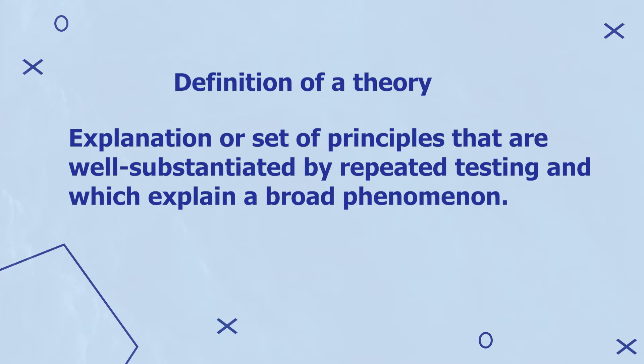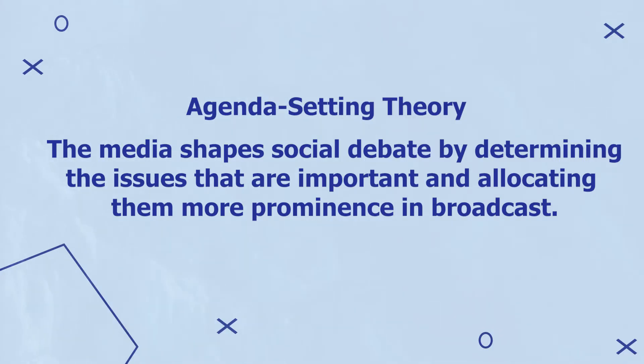This leads us to the second step of the research process, which is finding a theory that supports my observation. A theory can be defined as an explanation or set of principles that are well substantiated by repeated testing and which explain a broad phenomenon. The development of a theory is only possible through rigorous and repeated hypothesis testing. Theories provide a framework in which we view the world. The theory that comes to mind for my issue — the likeliness of Instagram users to eat out — is the agenda setting theory. The agenda setting theory posits that the media shapes social debate by determining the issues that are important and allocating them more prominence in broadcast. Some of my friends that use Instagram more may be victims of the agenda setting role of the media, influencing them to want to eat out more compared to preparing homemade meals.